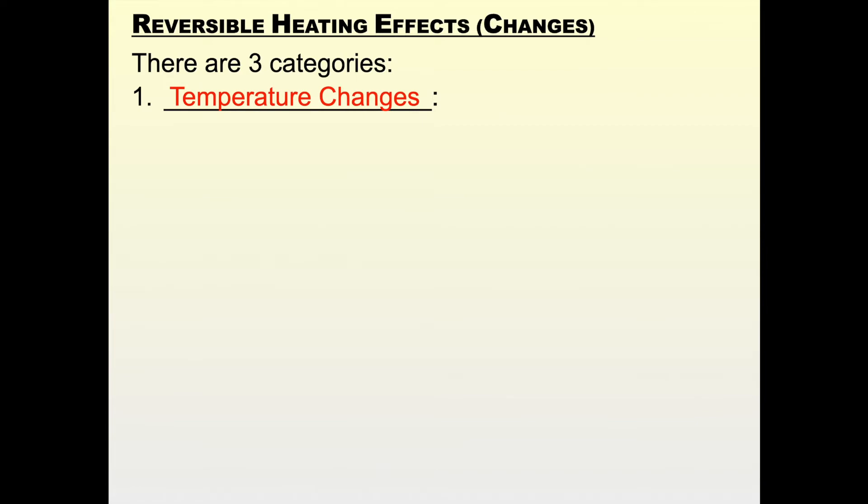The second type of changes that are going to happen is called a reversible heating effect. That's the kind we're going to concentrate more on in our lessons about interactions of matter and energy. There's three different categories of reversible heating effects. The first one is called a temperature change. You can probably guess how that works.